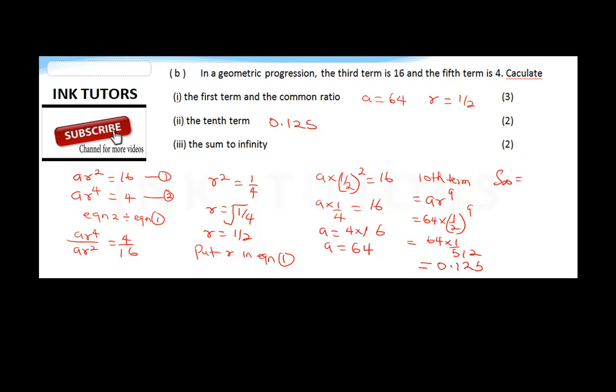...then we're going to apply this formula: A over (1 minus r), which now means it's going to be 64 all over 1 minus r is 1/2.